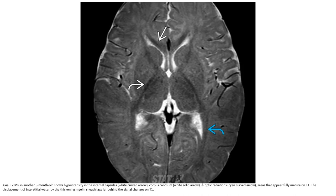T2 image shows another example with hypointensity in the internal capsule, corpus callosum, and optic radiation — areas that appear fully mature on T1. The displacement of interstitial water by the thickening myelin sheath lags far behind the signal changes on T1.